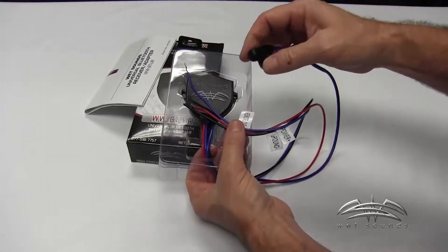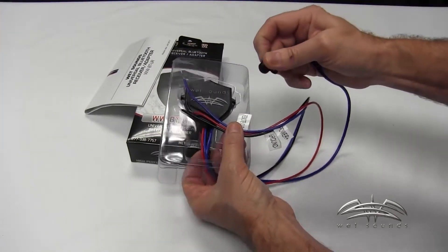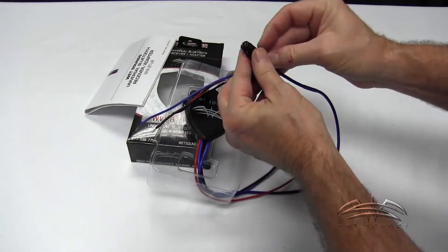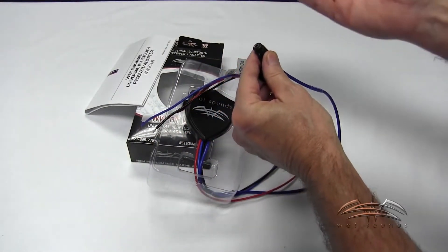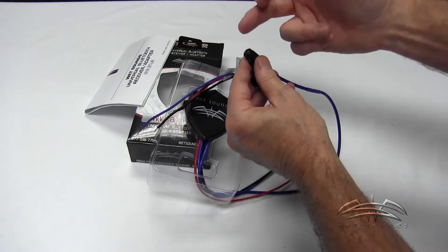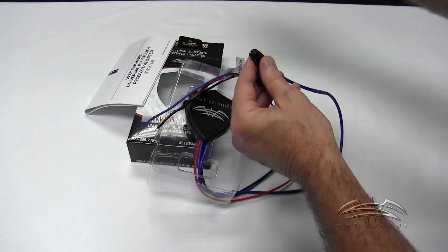This is 3.5 millimeter output, and this goes from here to the amplifier that you're using. If you have an amplifier with 3.5 millimeter, you're in great shape. If you have an amplifier with RCA cables, we also make the adapter for this. It will go from this to RCA.